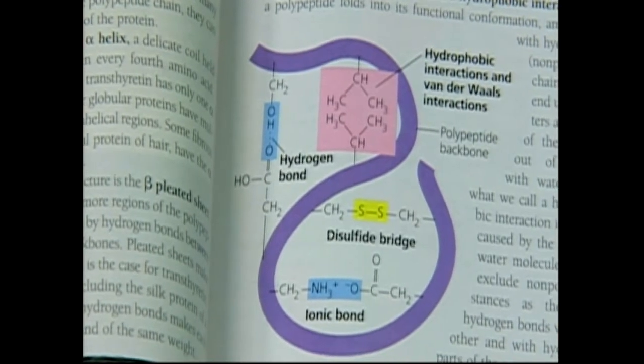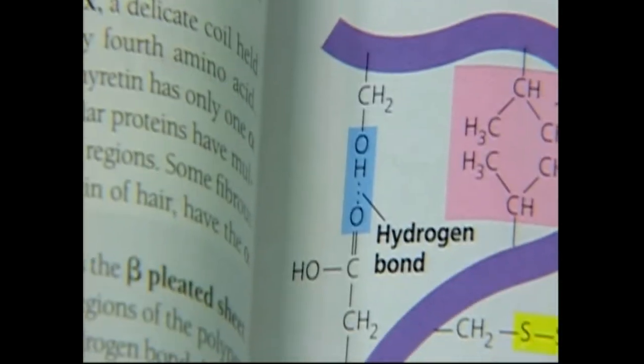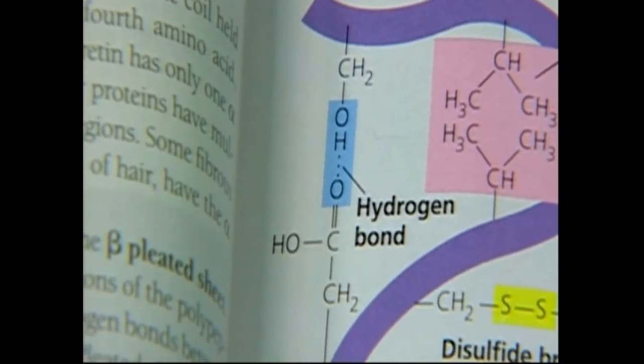Messenger RNA goes out, ribosomes put them together in a string, and then the side groups hang off. So they're able to fold back around.